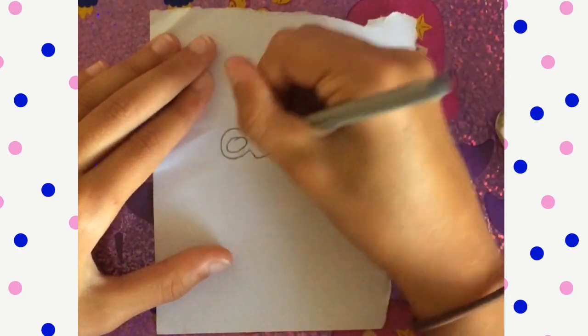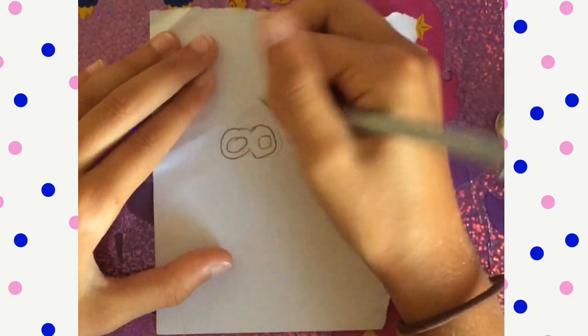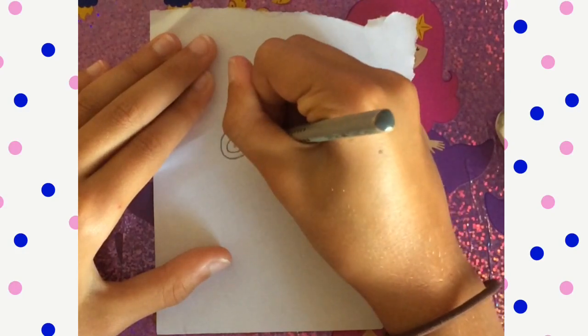Then you want to draw two inner circles and then inside those inner circles you want to draw one more.